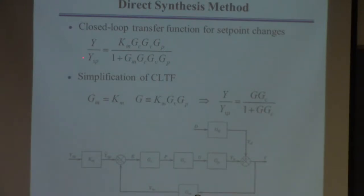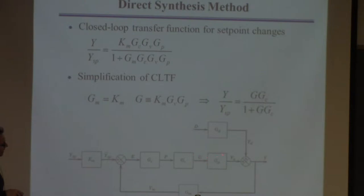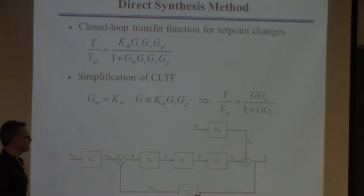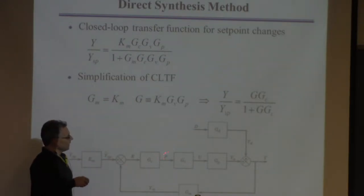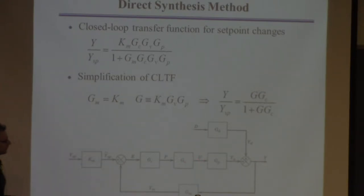This is a typical feedback system. We have a disturbance entering a transfer function, and the manipulated input entering a transfer function. Those two things add up to give you the output. We measure it, compare it to the set point, and send that signal to a controller. That sends a signal P to a valve, which ultimately changes something U — it changes the process. We're manipulating U to try to make Y equal to the set point.